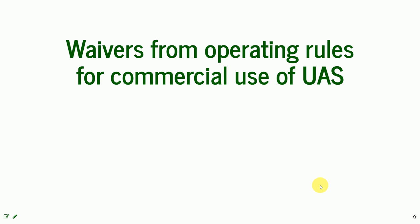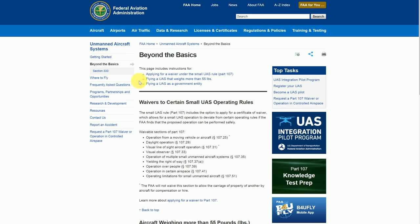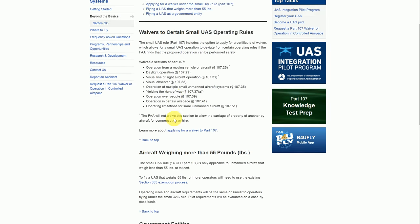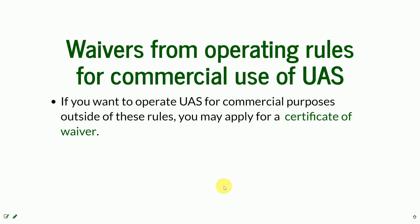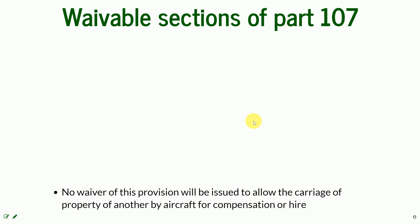But there are some businesses that recognize these rules will interfere with what they want to do with UAS or with data. The FAA found a way to control and check the safety of those operations — some of the rules can be waived. If you want to operate outside of the rules, you may apply for a certificate of waiver. Here is a link with the explanation from the FAA website on how to obtain waivers and what sections of Part 107 are available for waiver.